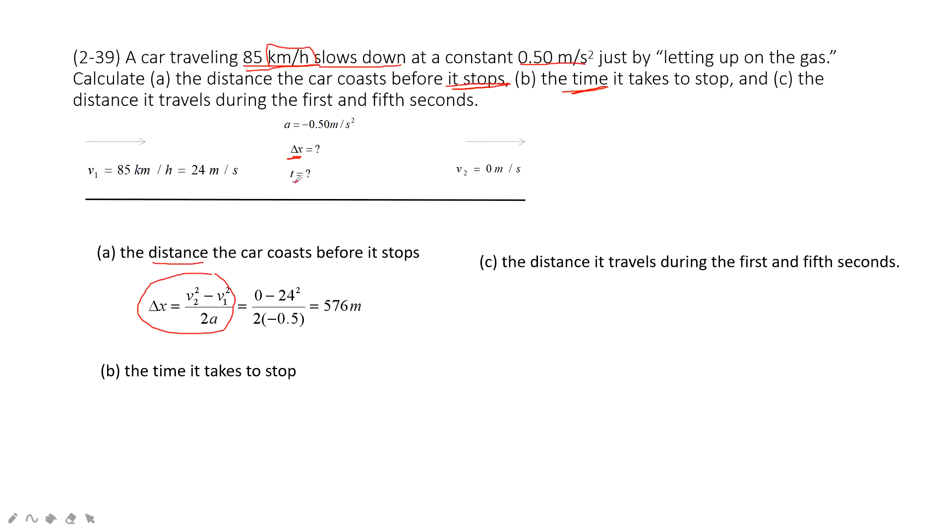And then the second one asks you to find the time t. You can see we have v1, v2 and acceleration. So quickly, we can get the time t is 48 seconds.